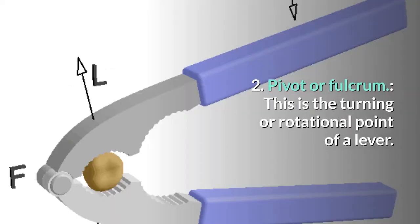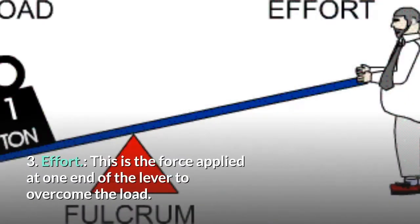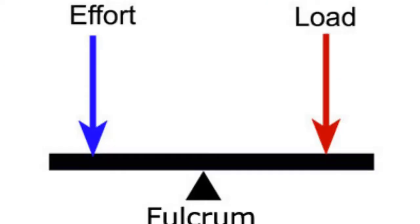Pivot or fulcrum: This is the turning or rotational point of a lever. Effort: This is the force applied at one end of the lever to overcome the load. In levers, the positions of the pivot, effort and load determines the class of the lever.